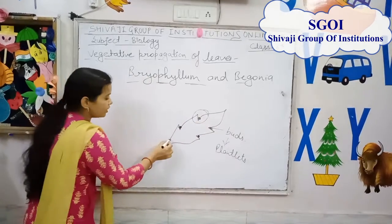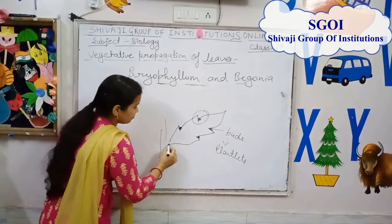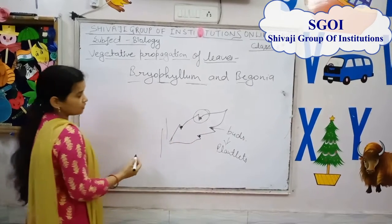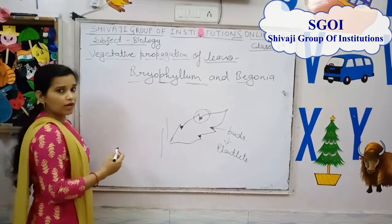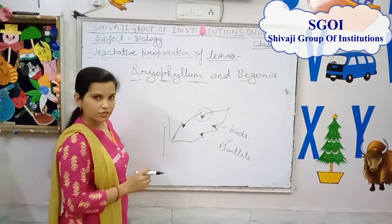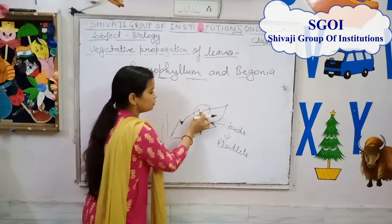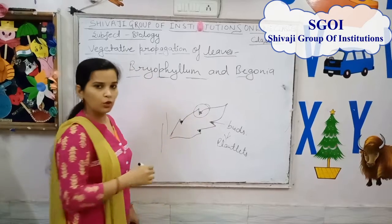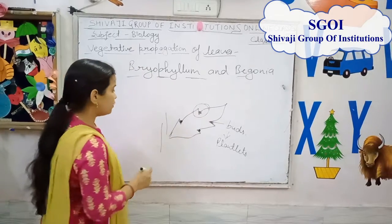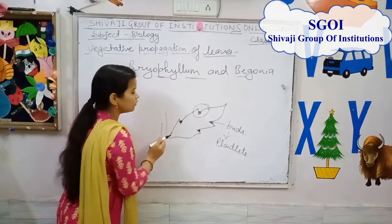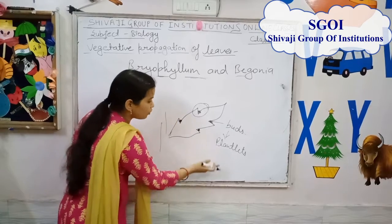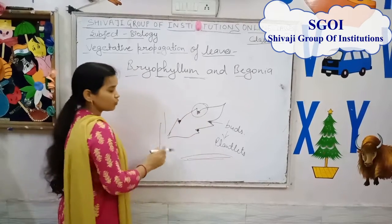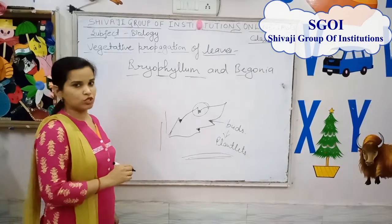If the whole leaf falls from the parent plant onto moist soil, then a new plant will also arise from there. This is the vegetative propagation by leaves.